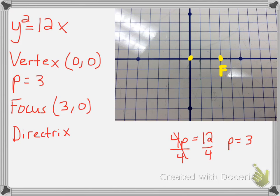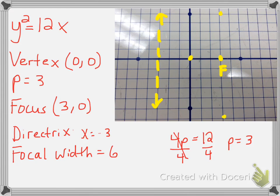Since we went three to the right for the focus, we go three to the left for the directrix. Going three to the left from the vertex crosses the x-axis at x equals negative 3, which is h minus 3. The reason it's equal to x is because it crosses the x-axis. The last thing is the focal width, which is 2p — so 2 times 3 is 6. Since the directrix goes up and down, we go up 6 and down 6 from the focus. With those three points, you create your parabola.